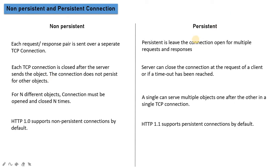In persistent mode, the connection will be closed either on time out or when the client closes it. For example, if you have opened an online form with 3-4 pages and you fill one page but take a lot of time on the second page, the connection will time out. In persistent case, there are two limits: first, time out; second, the client has closed the connection.